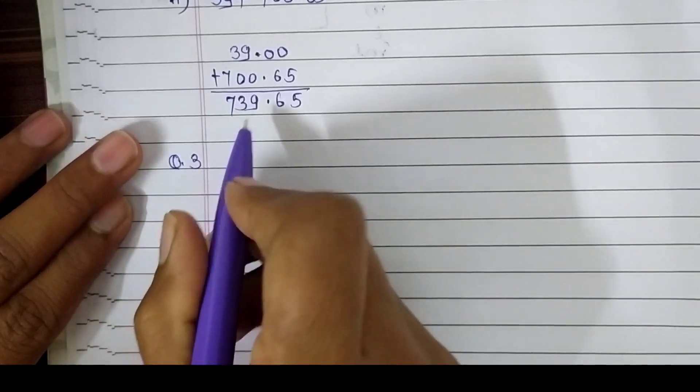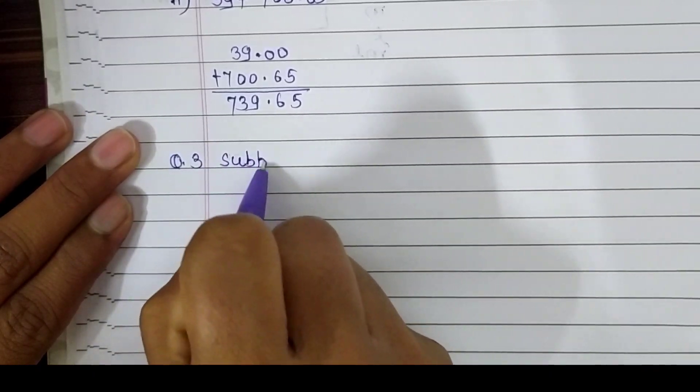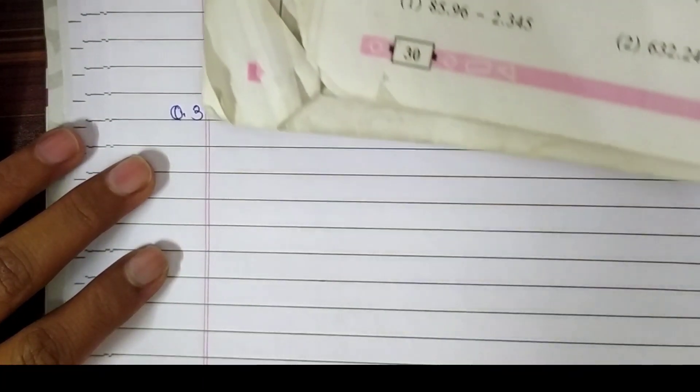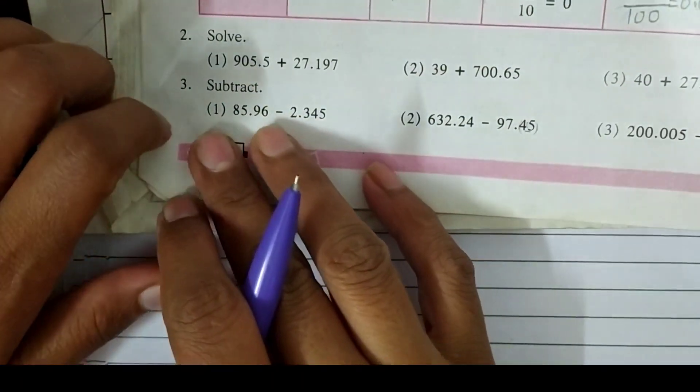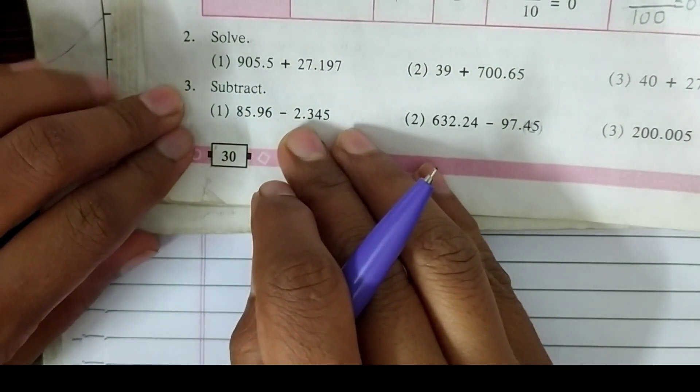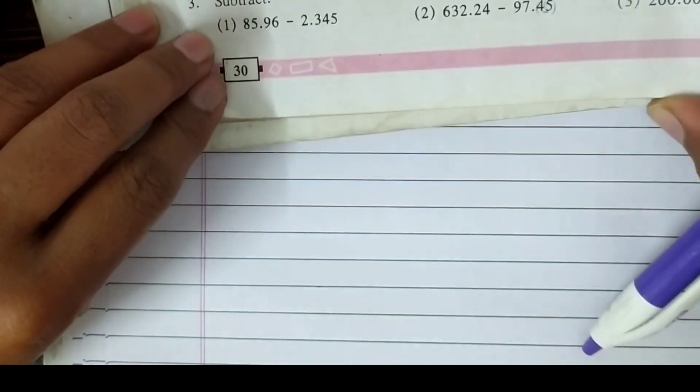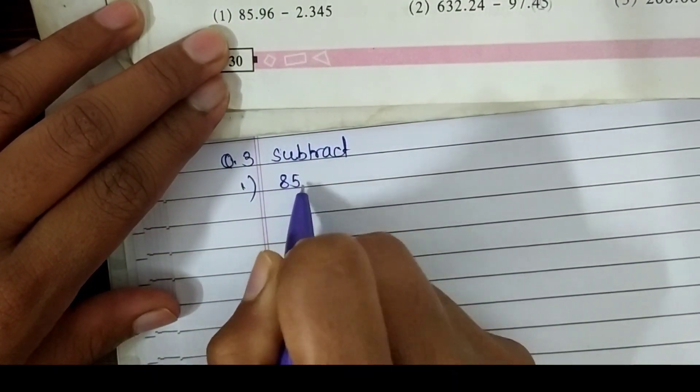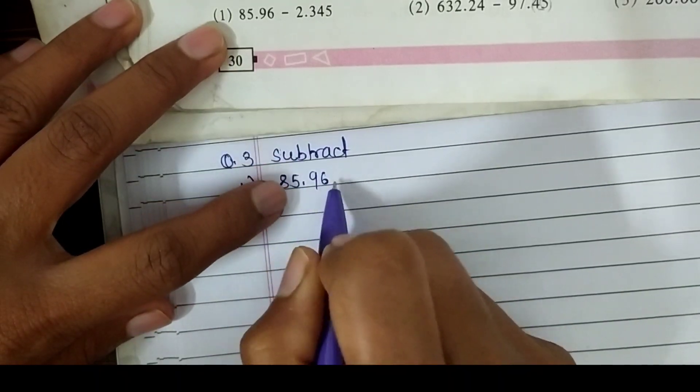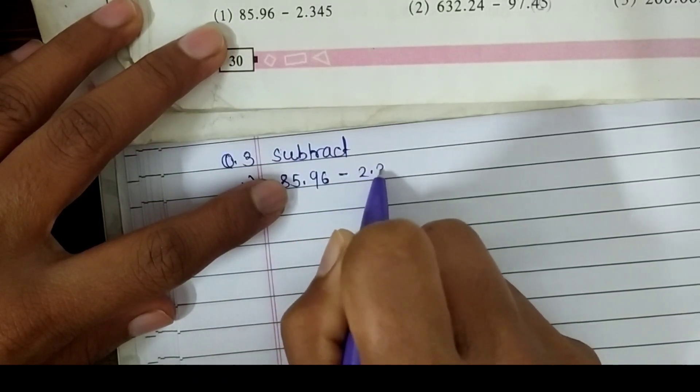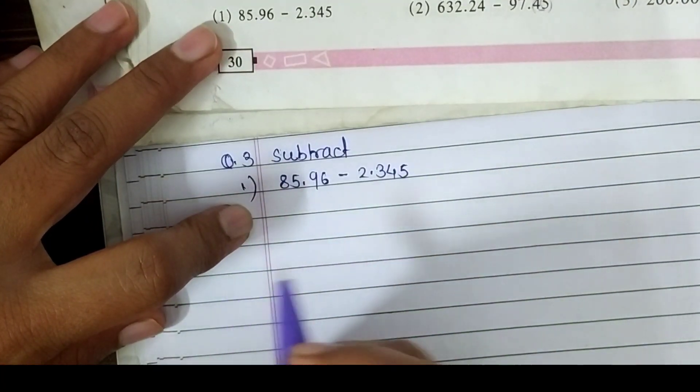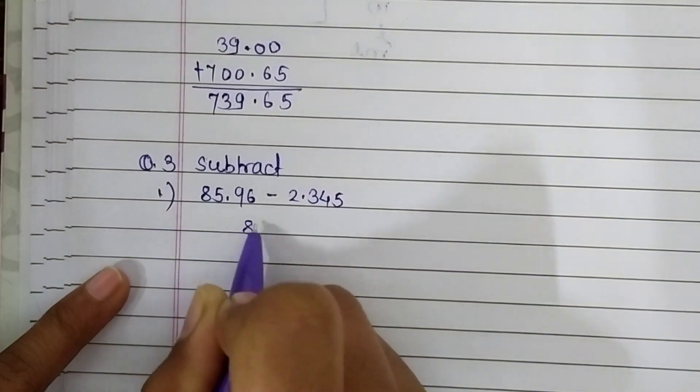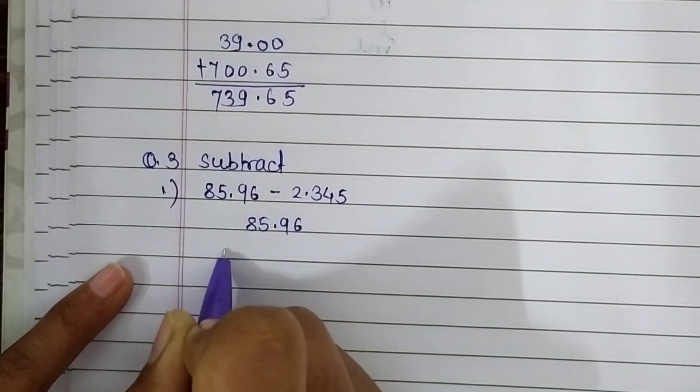The third question is subtract. Here they give us three problems. The first question is 85.96 minus 2.345. Let's subtract it. Write it in vertical.